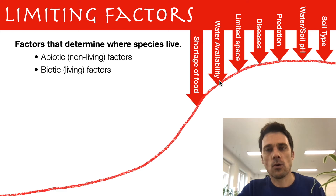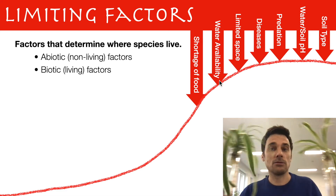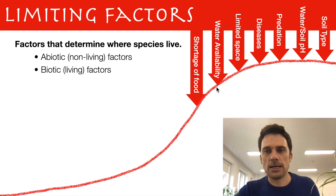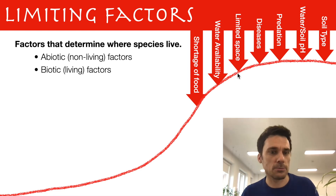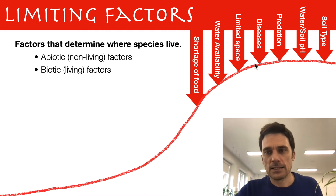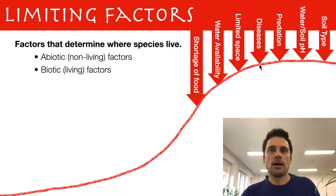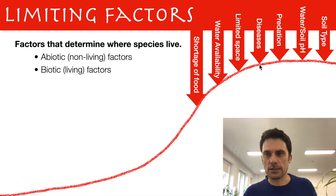Water — if you run out of water, that's going to limit how any population, from plants to animals, can grow. Space — the more people on this planet, we run out of space, and that's a limiting factor for the human population. Disease, as we know from coronavirus and other diseases, limits how far we can push populations.